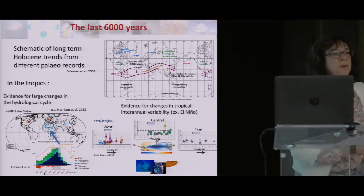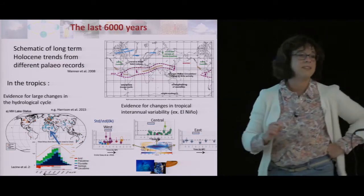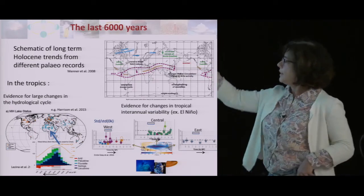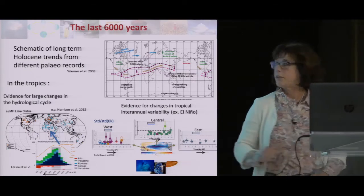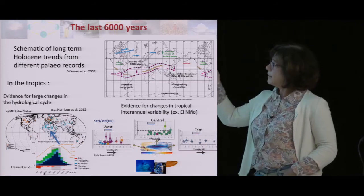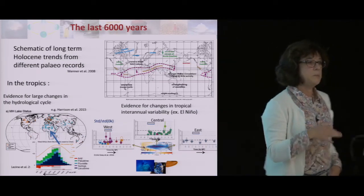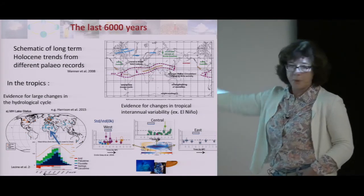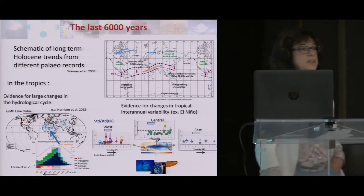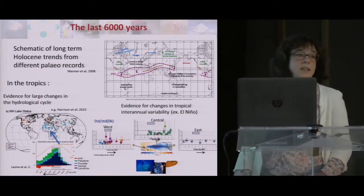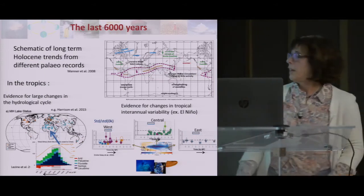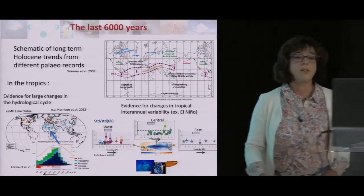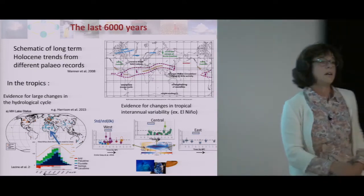What is even more interesting is that now we can go to interannual variability, thanks to reconstructions from corals, shells, giant bivalves, and so on from different islands. People are starting to put all their data together, and what is emerging is that over most of the Holocene, variability in most places was lower than today — especially in the central Pacific. It also shows that ENSO has always been there; it didn't start 5,000 years before present, but maybe it increased from there.